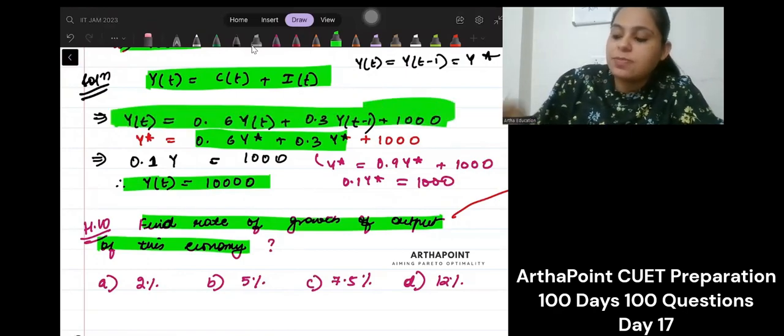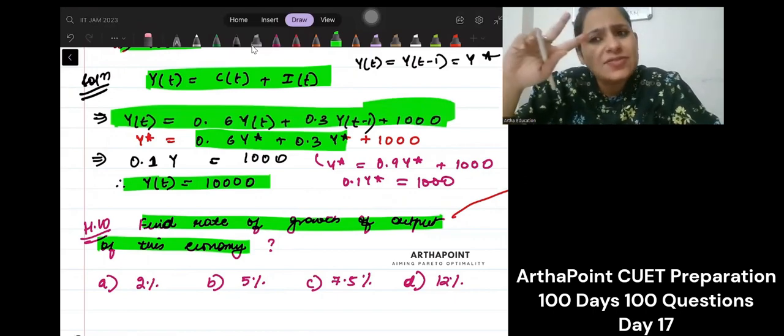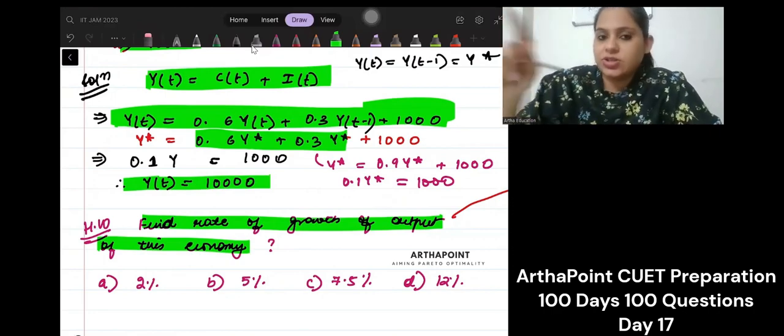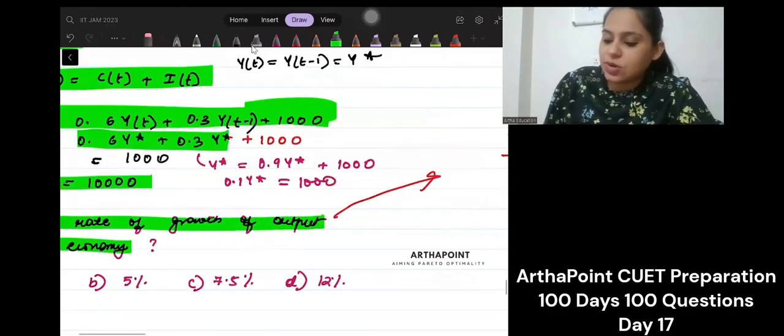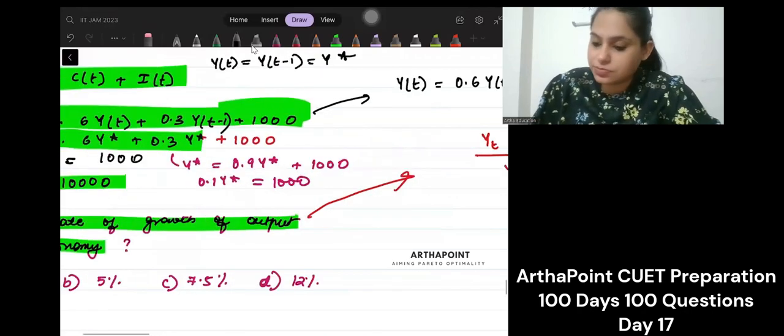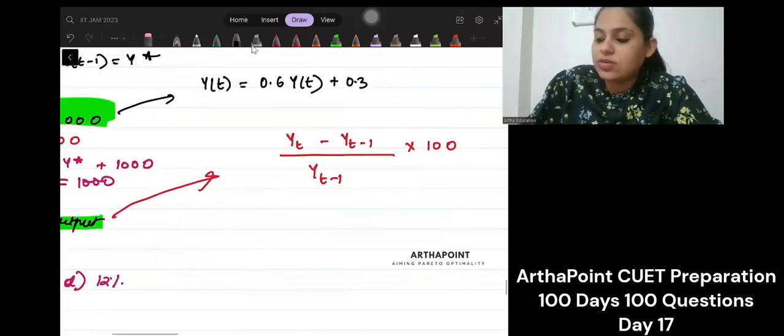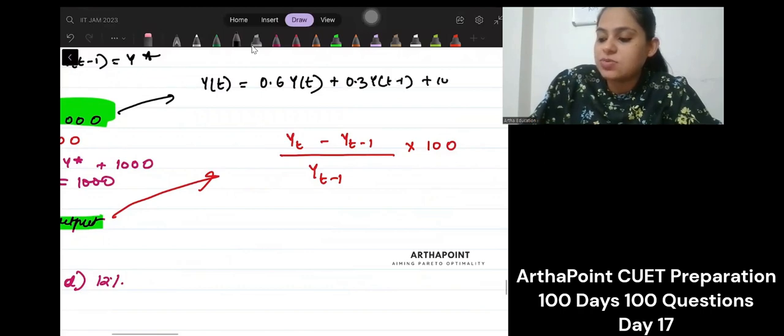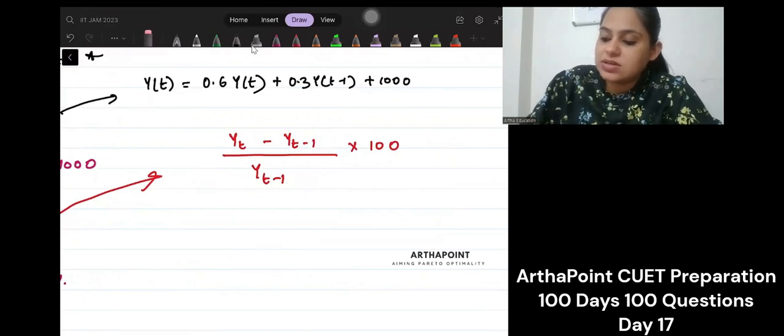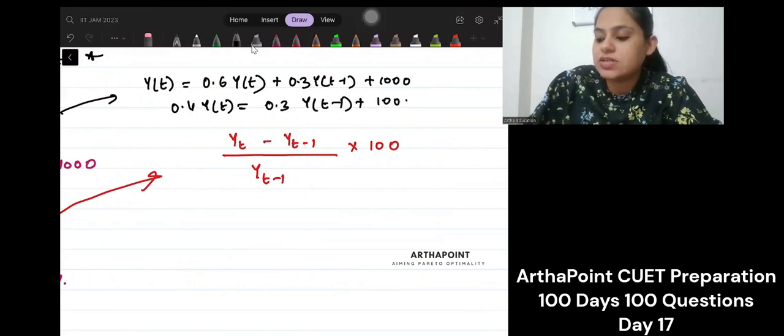Is equation ke around if we play. We have some relationship between Y(t) and Y(t-1). Can we use that relationship? So what relation will be formed if you see? You will get Y(t) is equal to 0.6Y(t) plus 0.3Y(t-1) plus 1000. So we will get 0.4Y(t) is equal to 0.3Y(t-1) plus 1000.